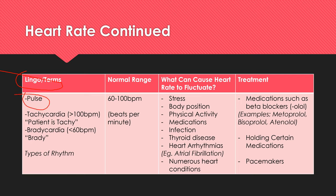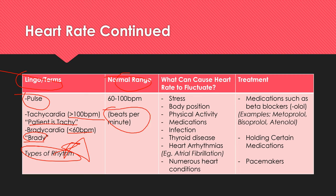Heart rate continued. 'Pulse' is another way of saying heart rate. Tachycardia is when the pulse is greater than 100 beats per minute — nurses often say the patient is 'tachy.' Bradycardia is when the heart rate is less than 60 beats per minute — sometimes called 'brady.' Normal range is between 60 and 100 BPM. There are many different types of heart rhythms, including S1, S2, S3 heart sounds — that's a video in itself. Heart rate is always expressed in beats per minute.